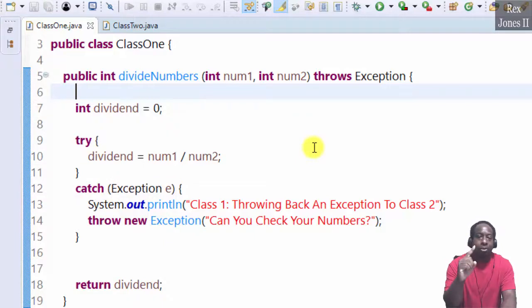After catching the exception, Class 1 throws a new exception with the message that's sent back to Class 2. The throws keyword is used in the method's signature because the method may throw an exception. We can add one or more exceptions separated by a comma. That's it for both keywords, throw and throws.